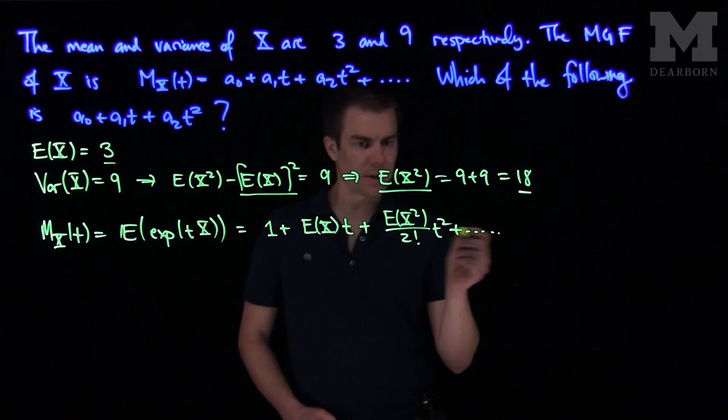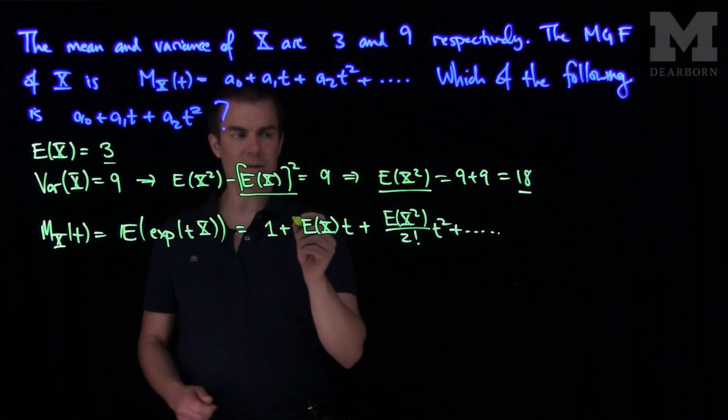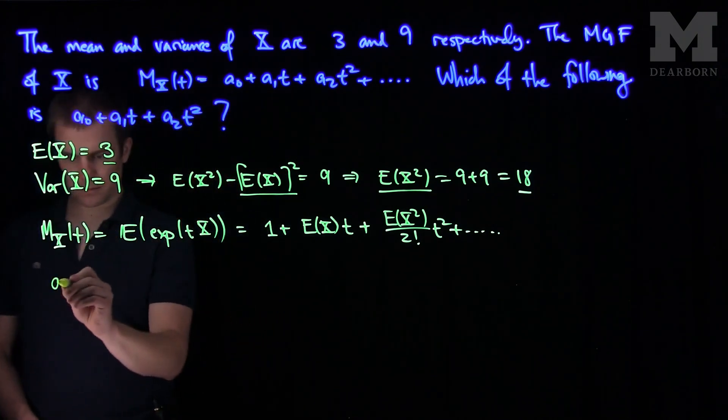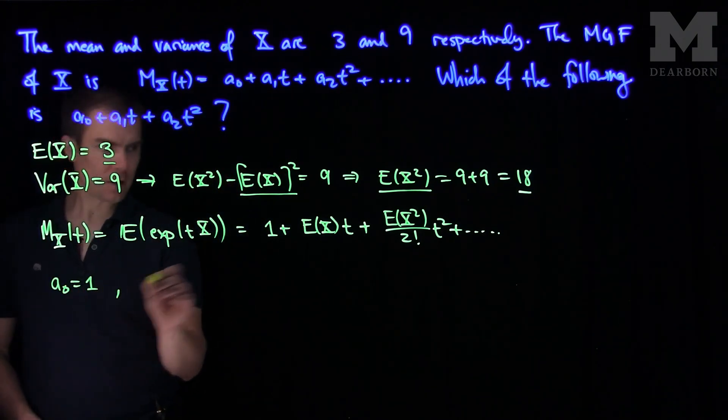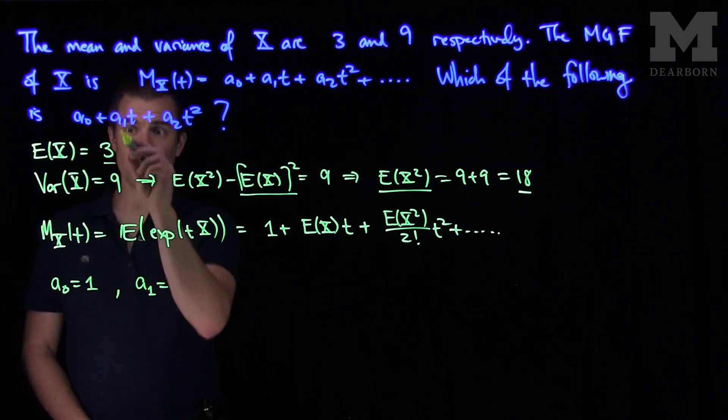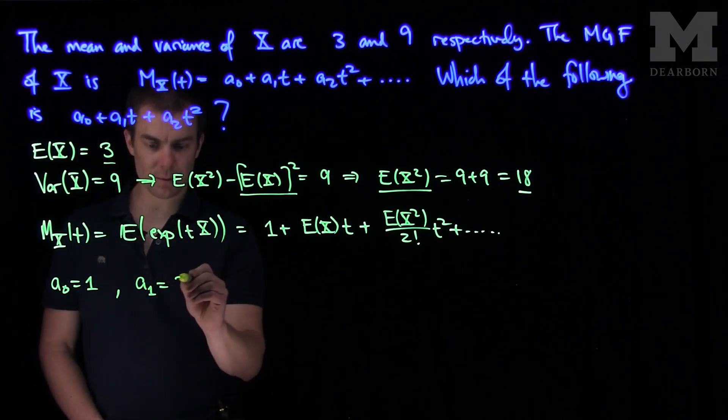And so what I see from this is that the a₀ term is going to be 1. The a₁ term is going to be the expected value of X, so that's going to be 3.